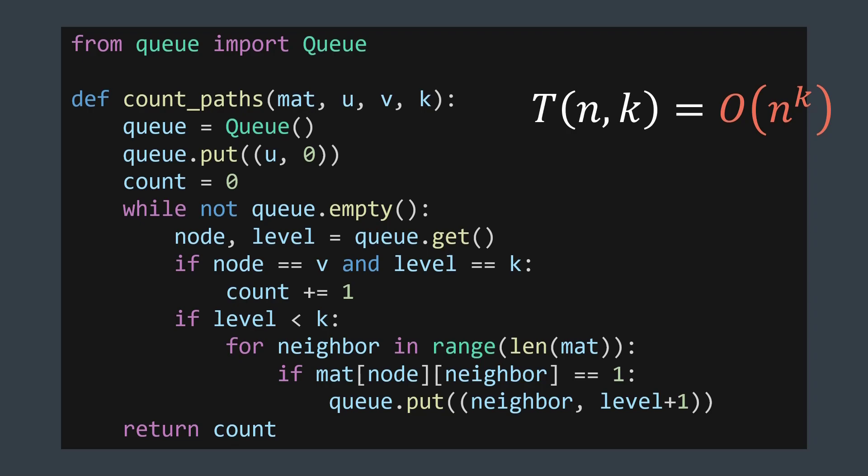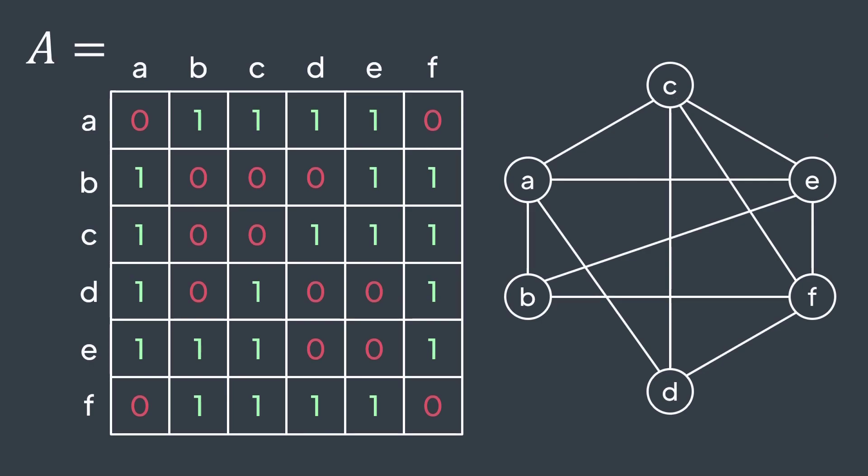For the graph representation, we will use an adjacency matrix, an n by n matrix A, where A of ij is 1 if there is an edge between i and j, and 0 otherwise. For our example, we get this matrix. A of be is 1 because there is an edge between b and e, and A of bc is 0 because there is no edge between b and c.